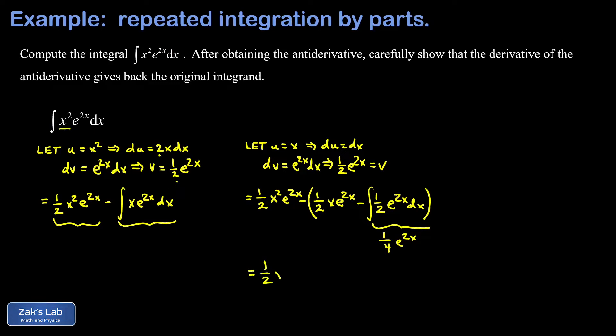I get one half x squared e to the 2x. I'm distributing the minus sign over these parentheses now, so I have minus one half x e to the 2x, and then plus the result of this integral, which was one quarter e to the 2x. And I need to put a plus c on that.